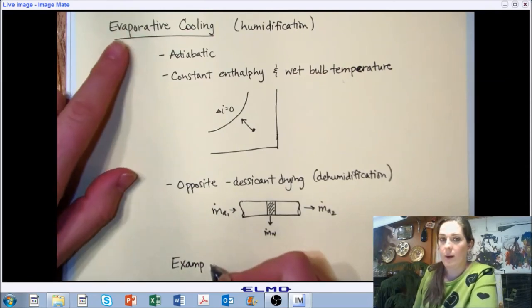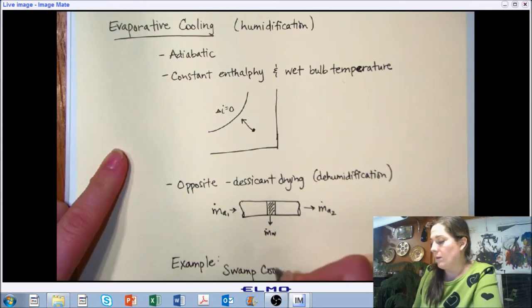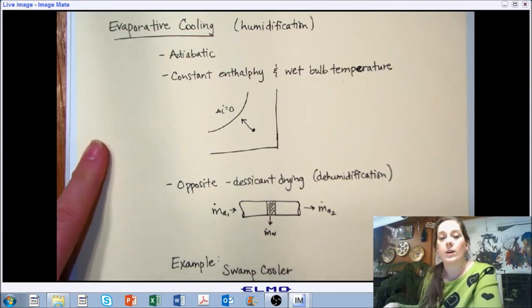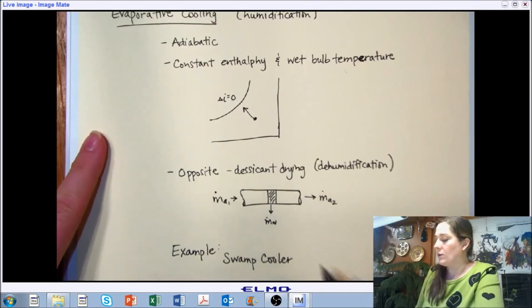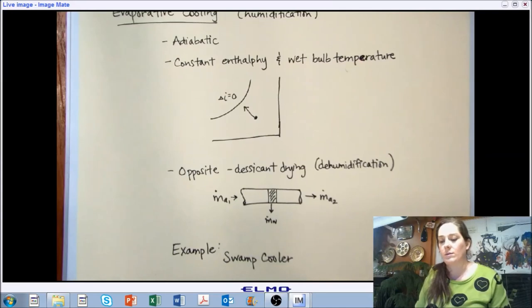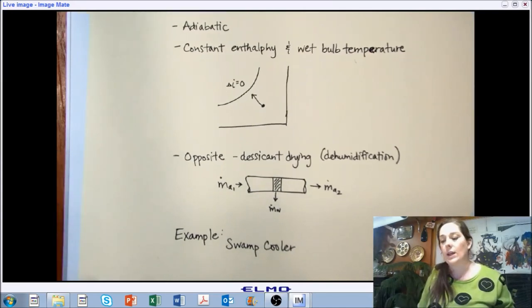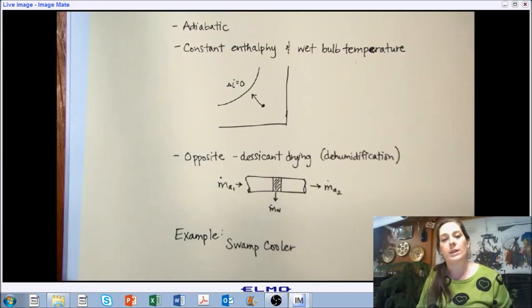Another example, and this is an example of evaporative cooling, but of this process, but on the humidification side is what we call a swamp cooler. Without spending much of our video time on it, I challenge you to go look up what a swamp cooler is and then bring your questions about what it is and how it works and why it's important. But essentially, it's a very energy efficient way of cooling as long as you have an environment that's conducive to using evaporative cooling.